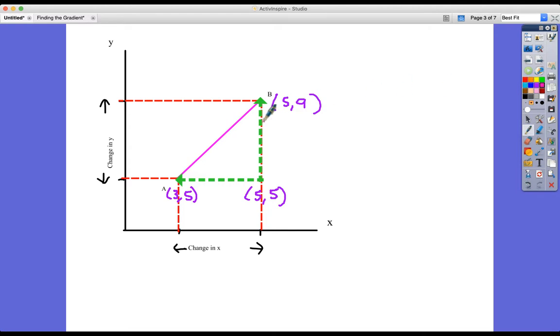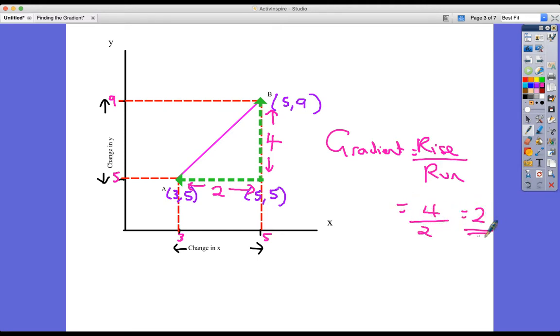What have we got? The difference between the y coordinates: the y coordinates here are 9 and 5, so the difference there is 4. 9 subtract 5 is 4. The difference between the x coordinates between these two points is 2. 5 subtract 3 is 2. So the gradient here is the rise divided by the run, which in this case is 4 divided by 2, which is 2.